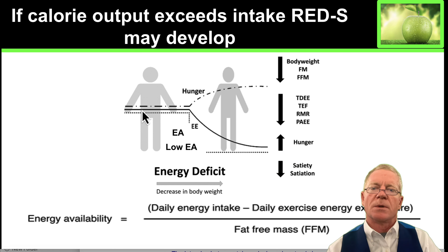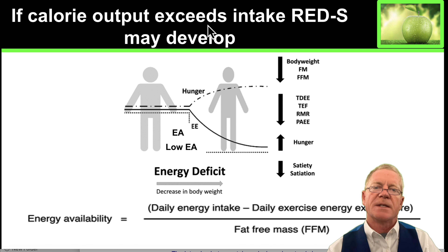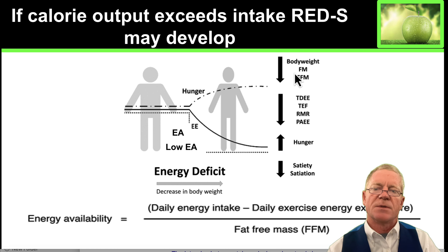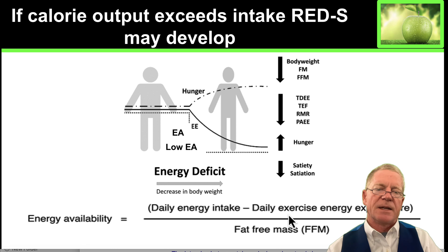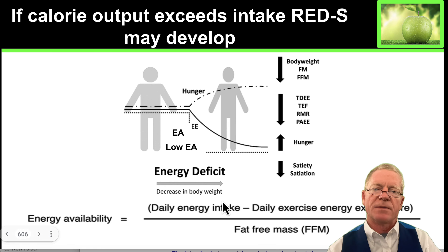Looking at low energy availability: if your caloric output exceeds your intake of calories, you can develop low energy availability and RED-S syndrome. The equation is: your daily energy intake minus your daily exercise energy expenditure, divided by your fat-free mass — that is your total energy availability.